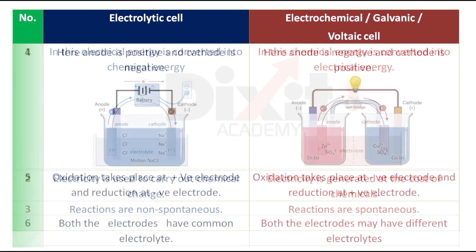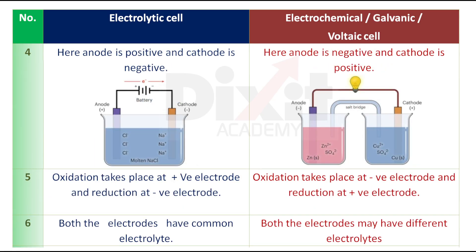Point number four: In an electrolytic cell, the anode is positive and the cathode is negative. In an electrochemical cell, the anode is negative and the cathode is positive.